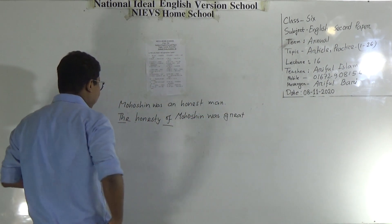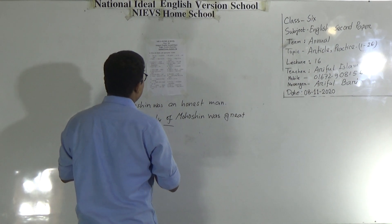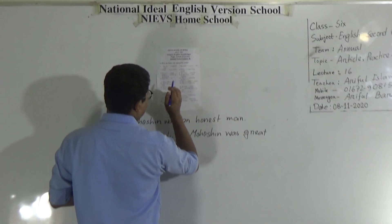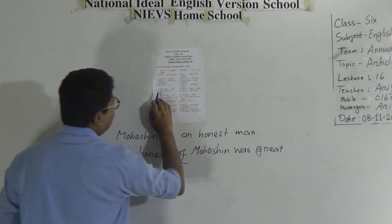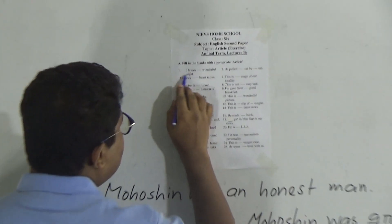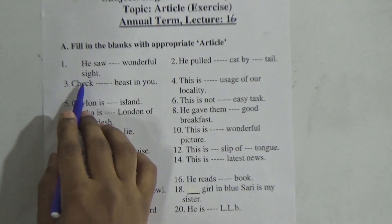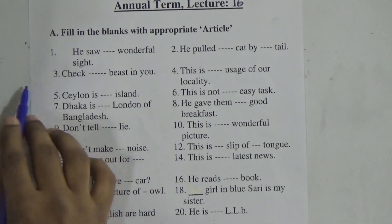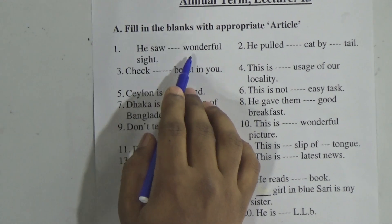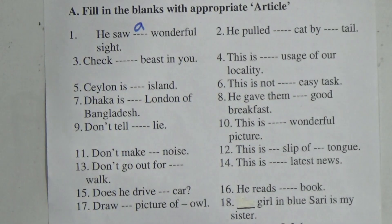So let's start the class today. Fill in the blanks with the appropriate article. He saw a wonderful sight. W is a consonant, so before a consonant we use 'a'.